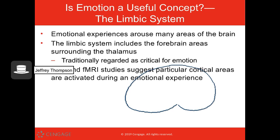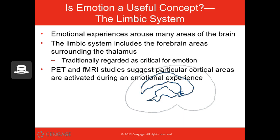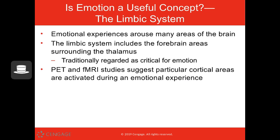The emotions we experience will arouse different areas of the brain — the limbic system. The limbic system is involved in our experience of emotion, and when we scan the brain we can see that certain areas are more active when we're experiencing a specific emotion.